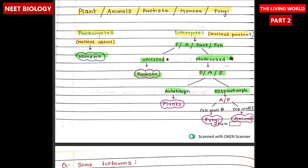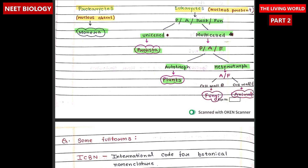Plants are autotrophs, which make their own food using sunlight. Animalia and Fungi are heterotrophs, which depend upon plants for food. Further, Animalia and Fungi are divided on the basis of presence or absence of cell wall. Fungi have cell walls present, and animals do not have cell walls.